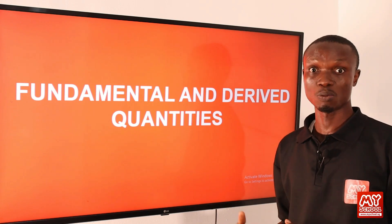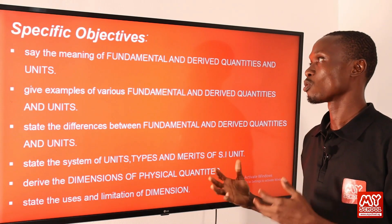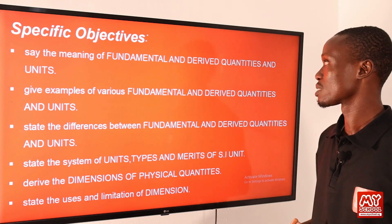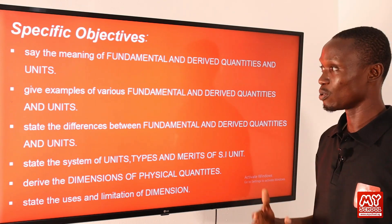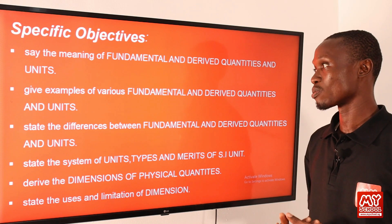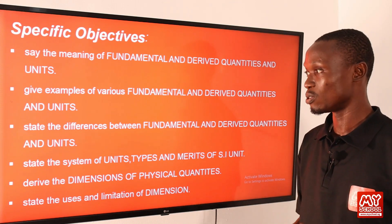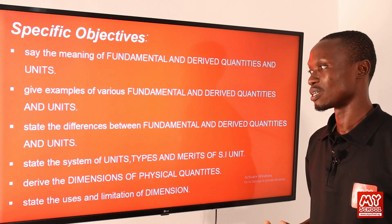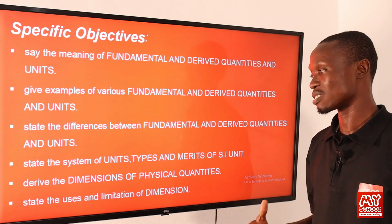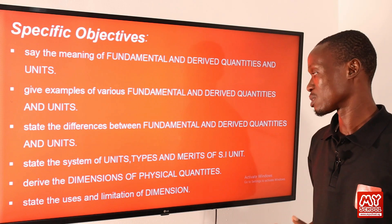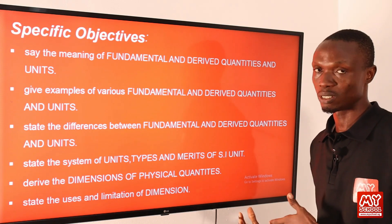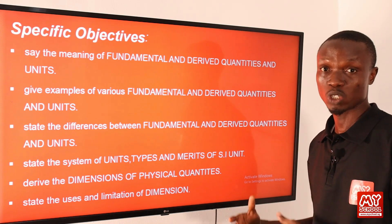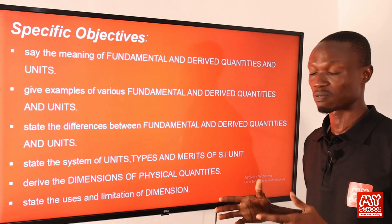So let's move to the next slide to see the objective of this lesson. At the end of this lesson, we should be able to say the meaning of fundamental and derived quantities and units. We should be able to give examples of fundamental and derived quantities and their units. We should be able to state the difference between fundamental and derived quantities and their units. Then we should also be able to state the system of units, mention the types and the merits of SI units. Then we should also be able to derive the dimensions of physical quantity, which is very, very important as far as physics is concerned.